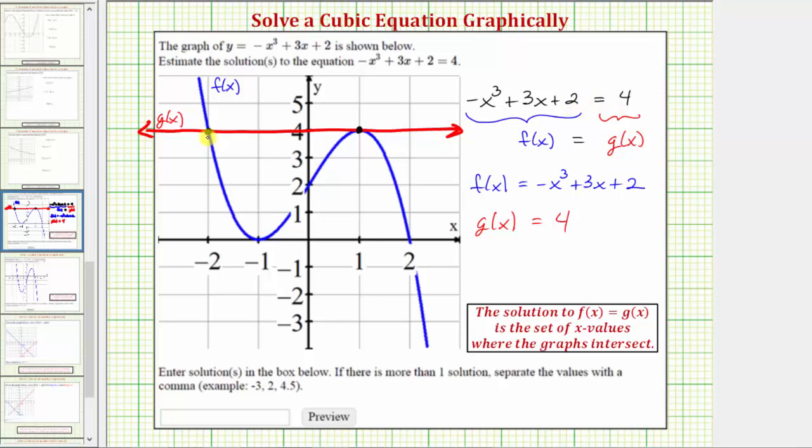Notice how the x value at this point of intersection is negative two and the x value at this point of intersection is positive one.